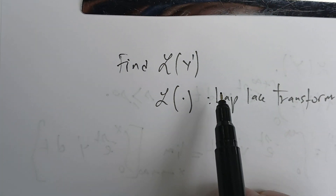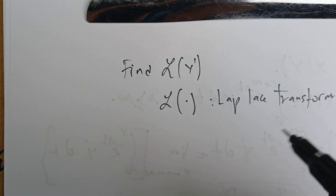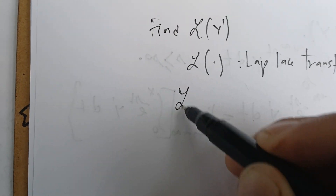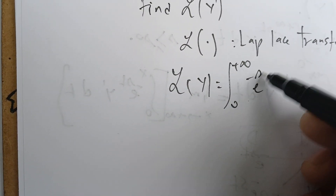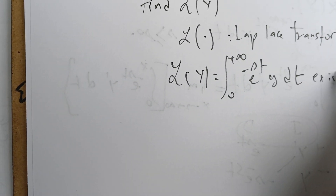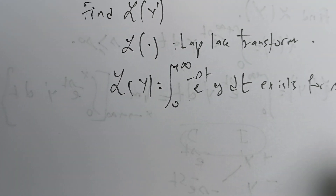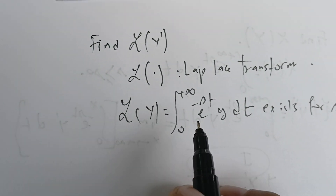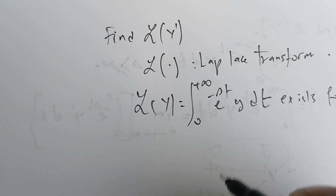Now we're going to find the Laplace transform of Y prime. Y prime is a function — it's the derivative of Y. We're going to first assume that the Laplace of Y, given by the integral from zero to infinity of e^{-st} Y dt, exists for some S greater than S0. We need that assumption, and now to find the Laplace of Y prime, we're going to use the definition and integration by parts.